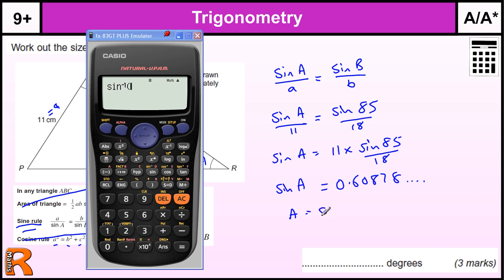So A is going to be sine to the minus 1, the inverse sine, or the arc sine of that number there. Obviously, we've left that number into the calculator, which is the answer from the last part. Don't try to retype numbers in, because that's less accurate. The calculator is storing more information than you can see.